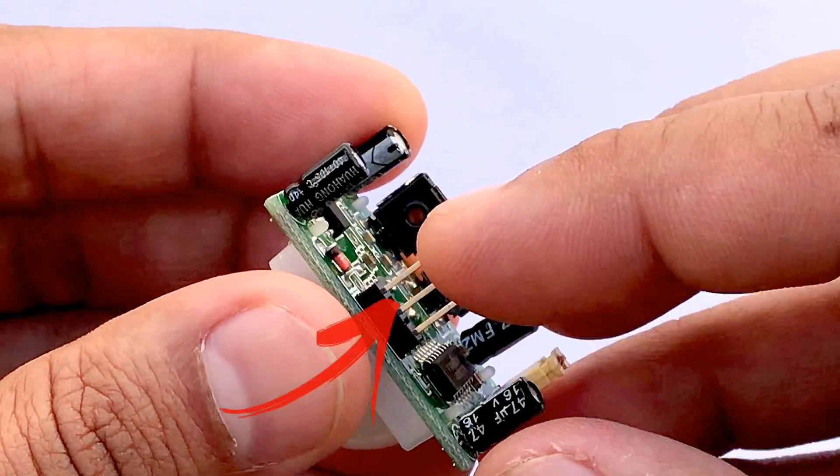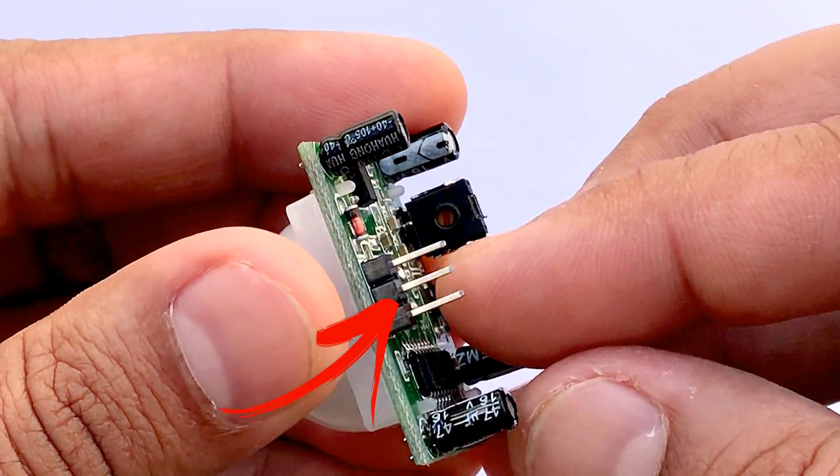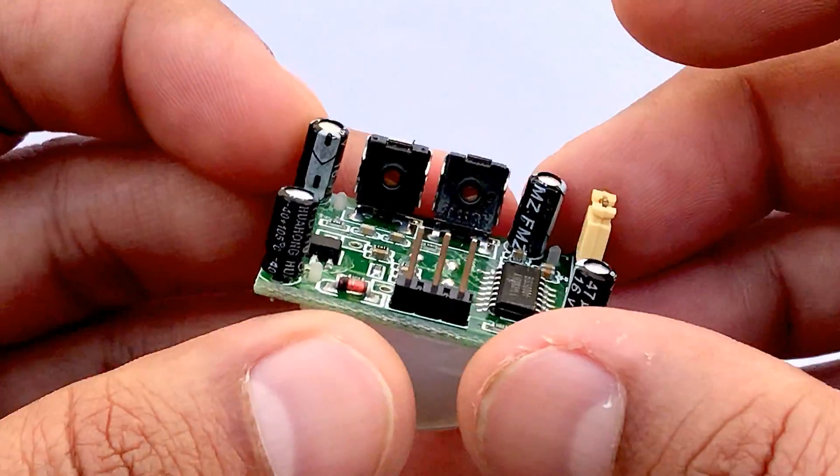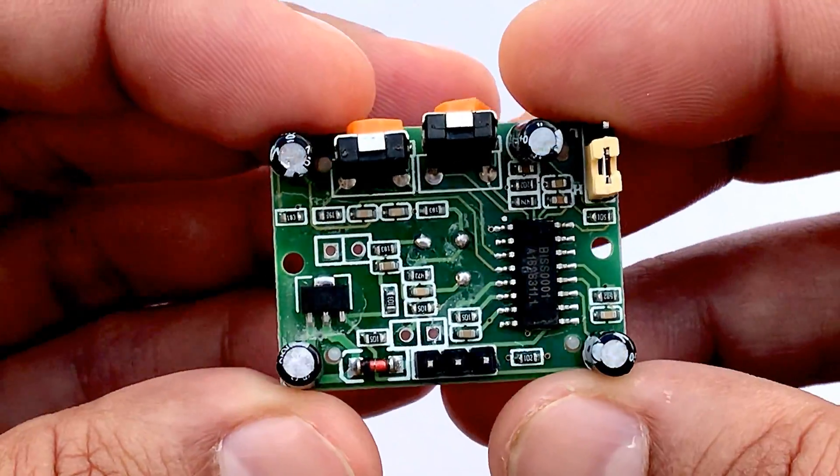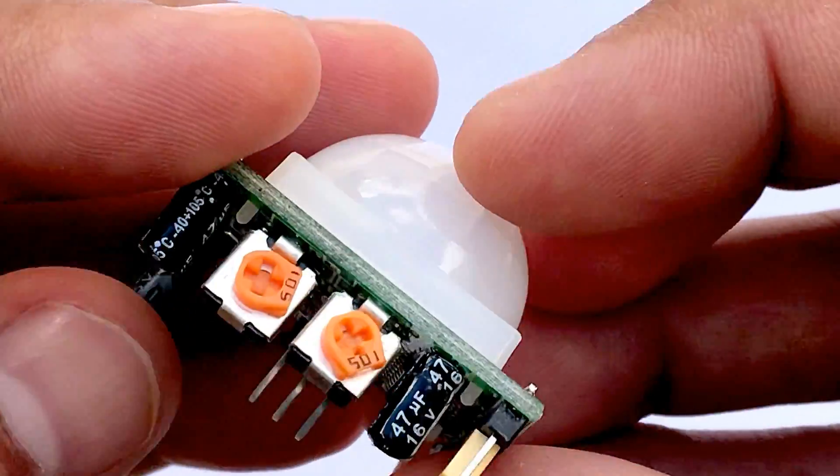The output pin is the one which communicates with the microcontroller by sending digital pulse high, which is 3.3V, when a motion is detected, and digital low, 0V, when no motion is detected.